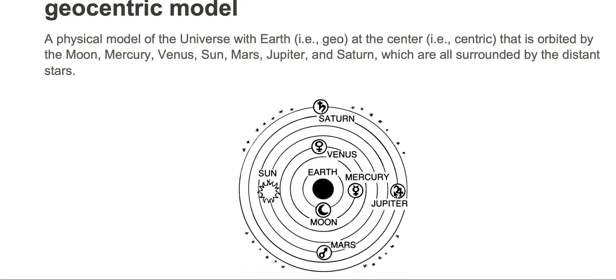Then you have Mars, Jupiter, and Saturn. And all of these objects are then surrounded by these very distant stars, which are located as dots on our diagram.